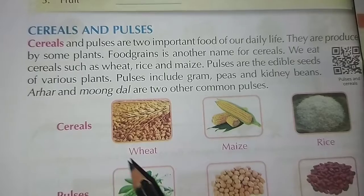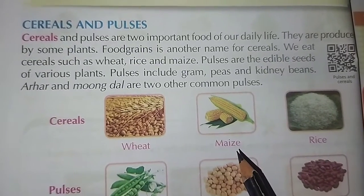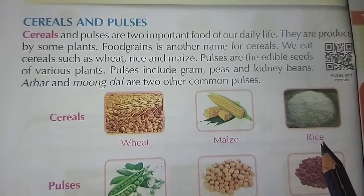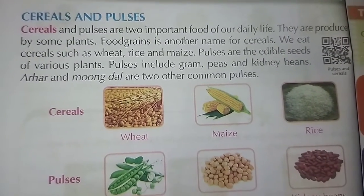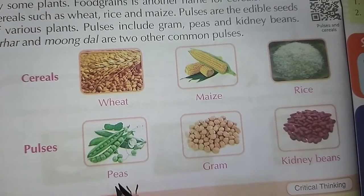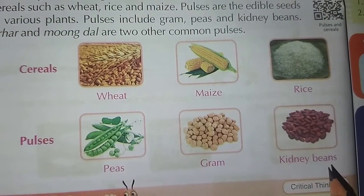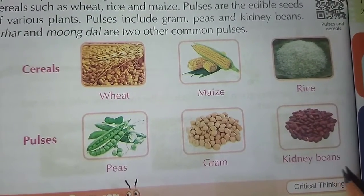Cereals: wheat, maize, rice. Pulses: peas, gram, kidney beans.